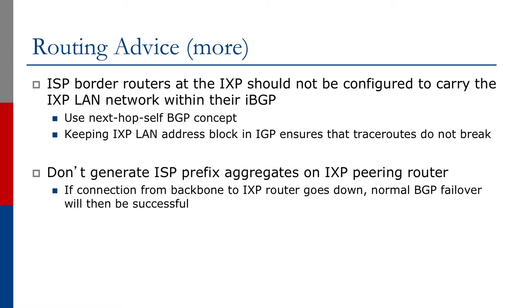It's really important that the service provider does not generate the aggregates on their exchange point peering router. If the connection from the backbone to the exchange point peering router goes down, normal BGP failover will then be successful. If they generate the aggregate on the peering router and the link from the peering router to the rest of the backbone goes down, the peering router has no way of knowing that the link is broken and will carry on announcing the ISP's aggregate to the exchange point members. While outbound traffic will proceed just fine, the return traffic's best path will be to the peering router that's just been disconnected from the backbone, thereby cutting off the member from all others across the exchange point.